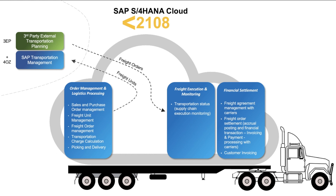The difference is that before 2108, the ability to do any kind of planning needed to reside outside of SAP S4HANA Cloud. To do so, you could resort to either a third-party external transportation planning toolset or SAP Transportation Management in an on-premise or private cloud deployment. If you wanted to integrate to a third-party transportation planning toolset, you needed to deploy scope item 3EP.